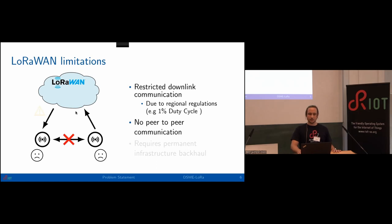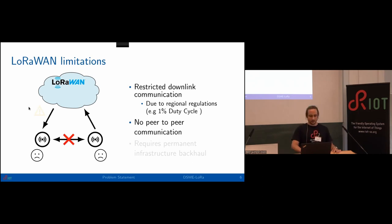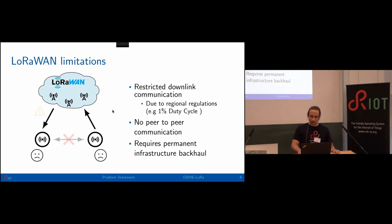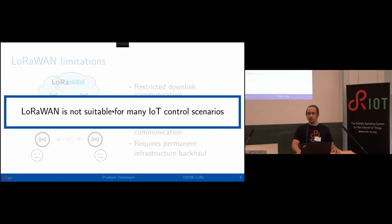On the other side, there's no peer-to-peer communication. If we have a sensor that needs to send data to an actuator, the only way is sending data all the way through the gateways to the network server, then back to the node — which hinders edge computing and can be very expensive for large networks. It also requires permanent infrastructure like gateways. If gateways have intermittent cellular connectivity, especially in rural areas, the whole LoRaWAN network becomes useless. So LoRaWAN is not suitable for many IoT control scenarios.